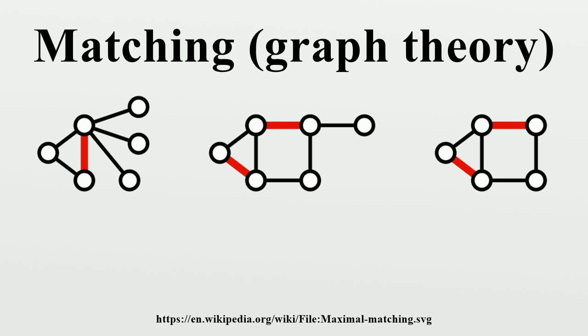A maximal matching is a matching M of a graph G with the property that if any edge not in M is added to M, it is no longer a matching. In other words, a matching M of a graph G is maximal if every edge in G has a non-empty intersection with at least one edge in M. The following figure shows examples of maximal matchings in three graphs.